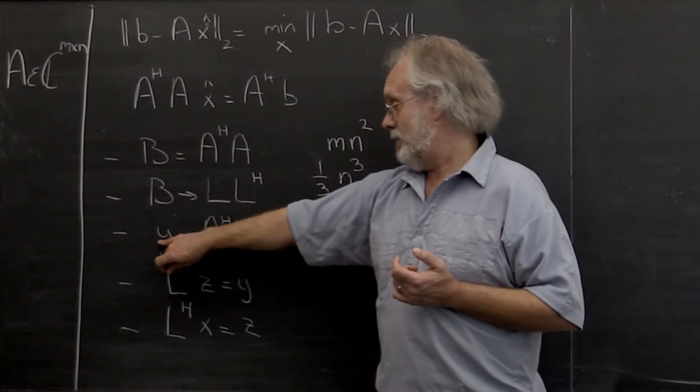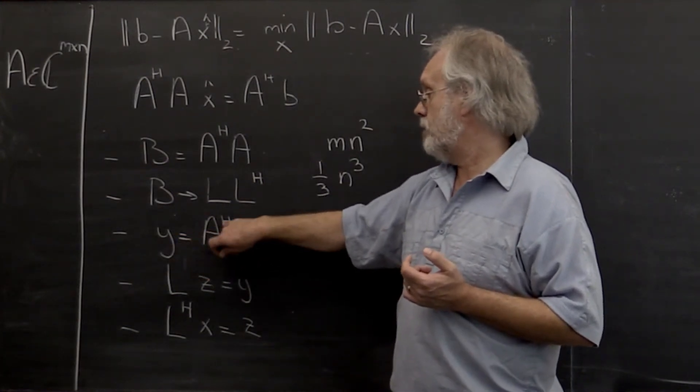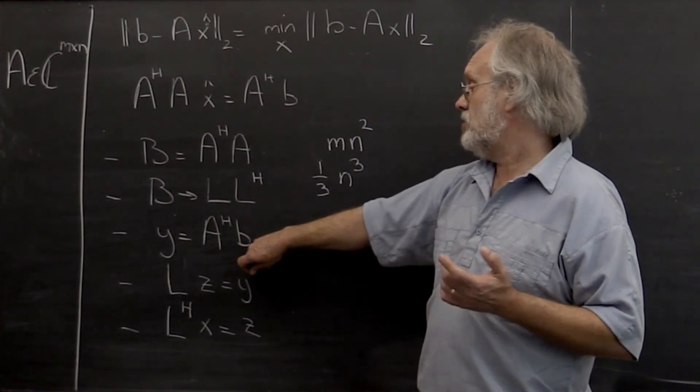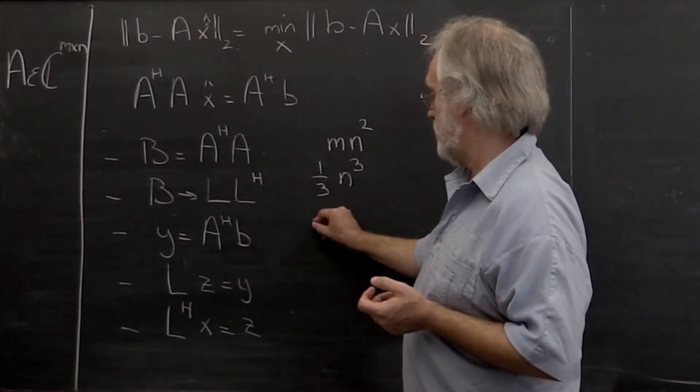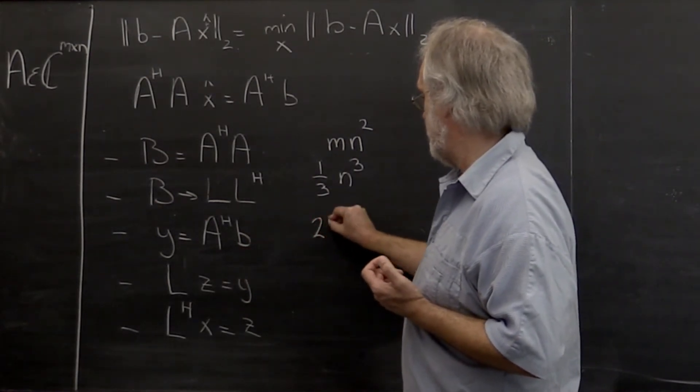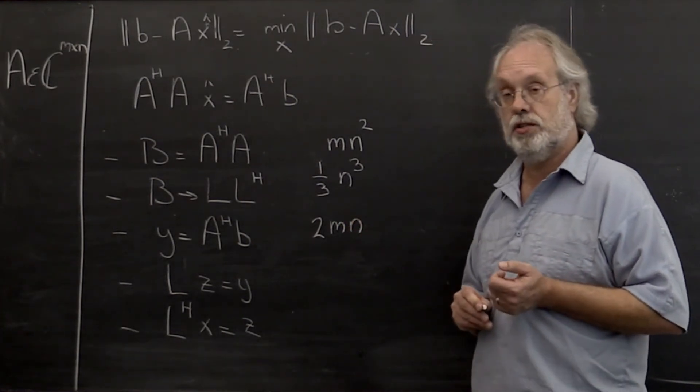Updating the right-hand side by performing A Hermitian transpose times B. Well, that's a lower order term, but let's just be thorough and say that's 2mn floating point operations.